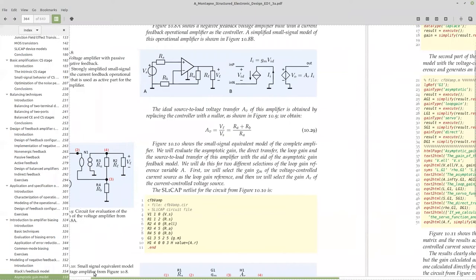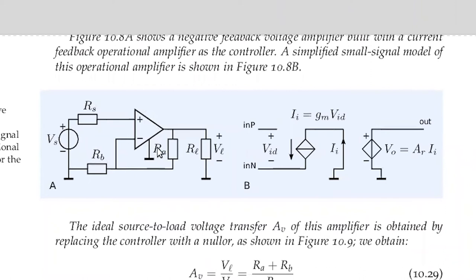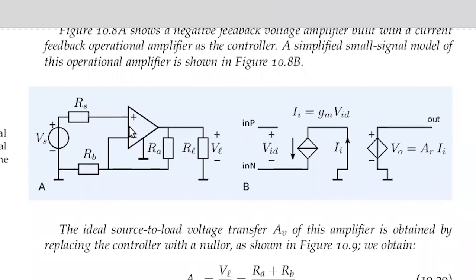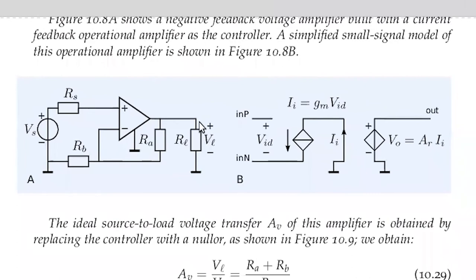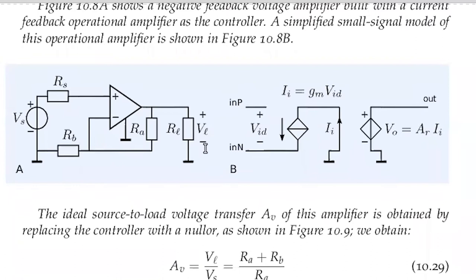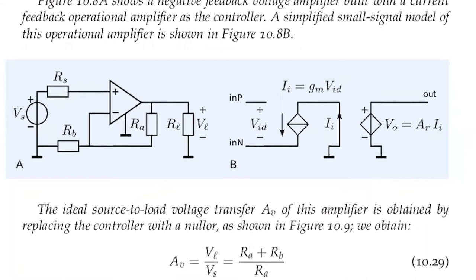I have a voltage amplifier — a negative feedback voltage amplifier with an operational amplifier as controller. This is figure 10.8. You see the voltage attenuation from the output: RA, RB. Across RB we have the feedback voltage, and if the controller is doing its work, this voltage will be made equal to Vs, resulting in the output voltage being exactly (RA + RB) / RA times the input voltage. So if the controller is a nullor, we have the ideal gain written in expression 10.29.